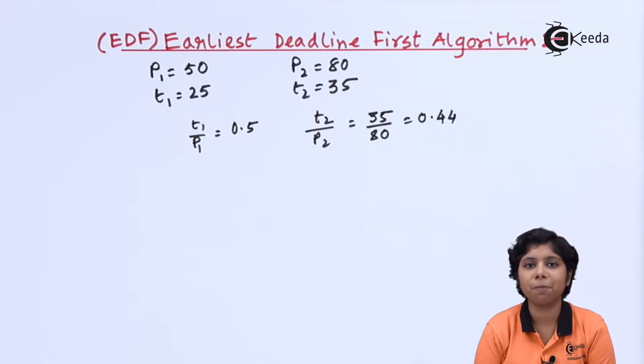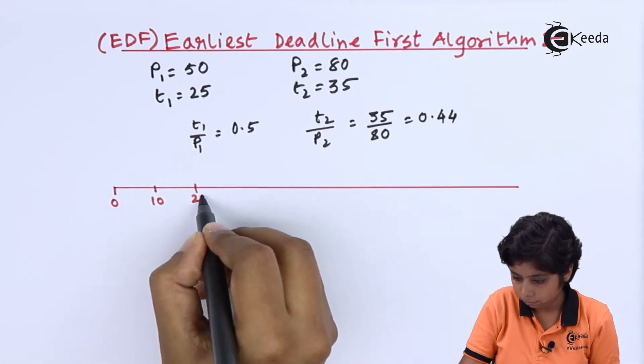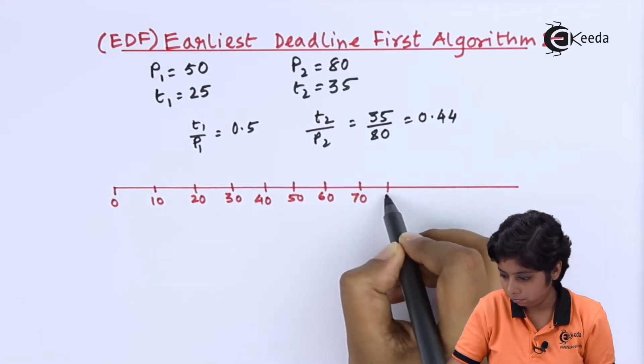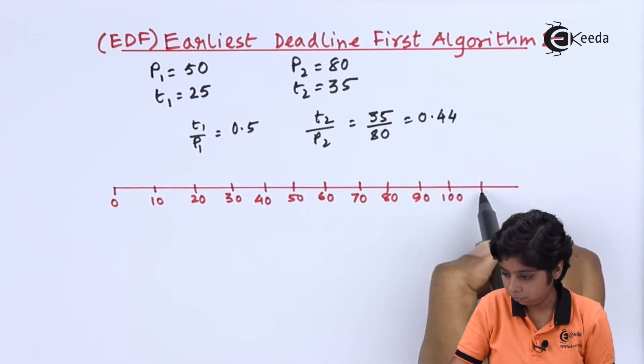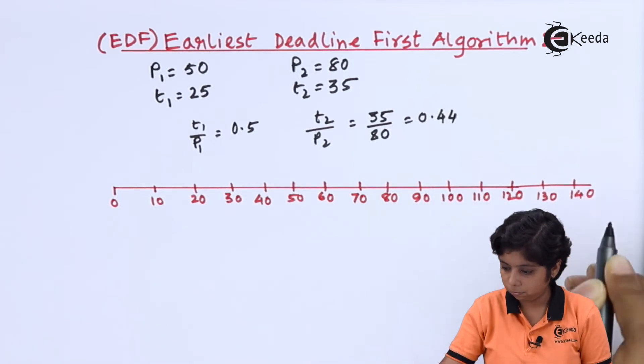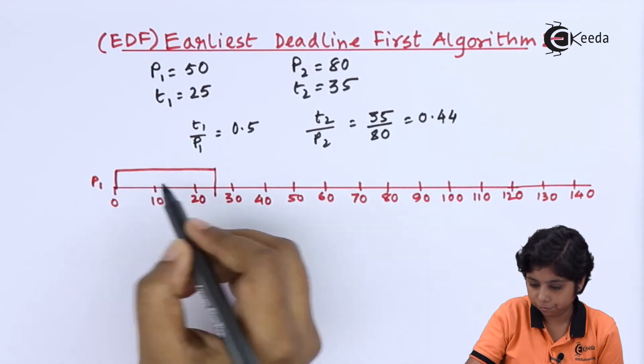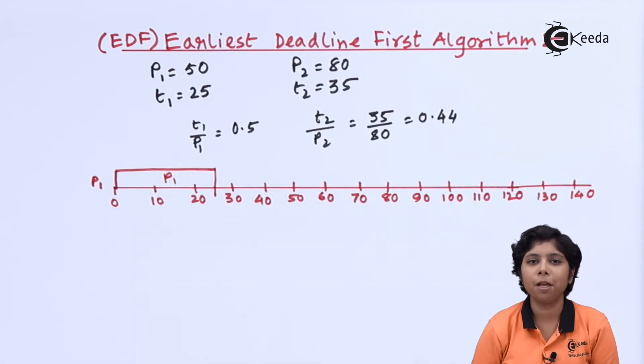Now here the priority depends upon the deadline. The first deadline of process P1 is 50 and the second one is 80. So the shorter deadline period is P1, so we will begin execution with P1. At first P1 begins its execution. As it has a processing time of 25 milliseconds, it will finish its execution. At 25 milliseconds, P2 will arrive.